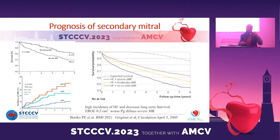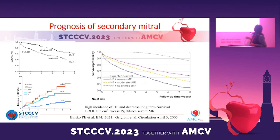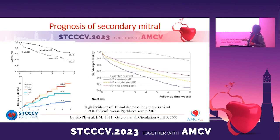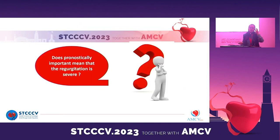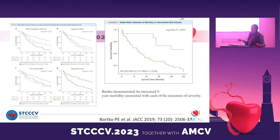Moving to the severity of MR — it comes from several studies. There is a high incidence of heart failure and reduced survival when MR is present. The cutoff for severe MR is an EROA of 0.2 square centimeters. There is an interesting study by Barco demonstrating increased five-year mortality associated with each measurement of severity.